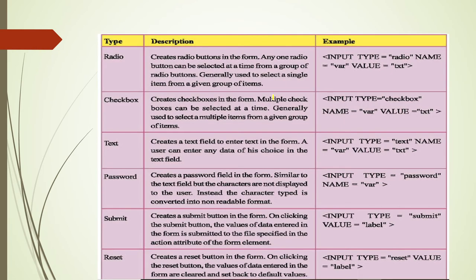Now let's look at the values of the type attribute used in the input tag. First, the radio button: it is round with a dot inside. Radio buttons are generally used in groups, and from the group we can select only one at a time. To use a radio button in HTML you write: input type equals radio, then give a name and a value of your choice.